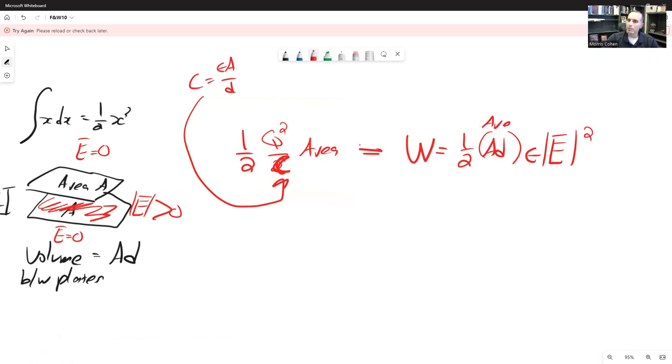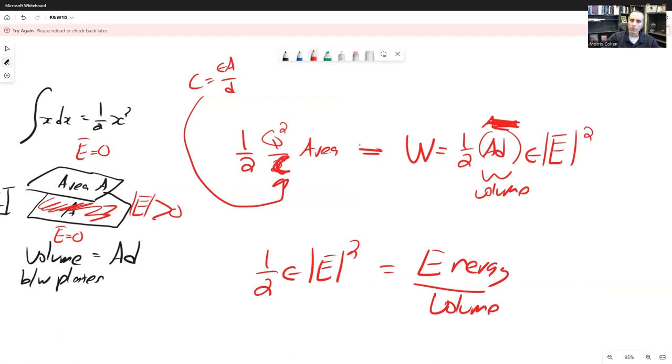Now, this A times D is the volume. So we can basically take the rest of this, one-half epsilon times the absolute value of E squared, and we can call that the energy density. It's energy per volume. So what this tells us is actually something very important and insightful, that the presence of electric field basically is the same thing as storing energy. It's, in particular, a volume density of energy stored.